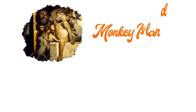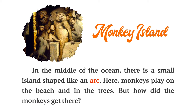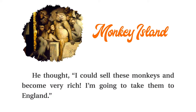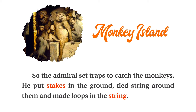Monkey Island. In the middle of the ocean, there is a small island shaped like an arc. Here, monkeys play on the beach and in the trees. But how did the monkeys get there? Once an English admiral was exploring Africa when he found hundreds of monkeys. The admiral's character was mean. He thought, I could sell these monkeys and become very rich. I'm going to take them to England. So the admiral set traps to catch the monkeys.